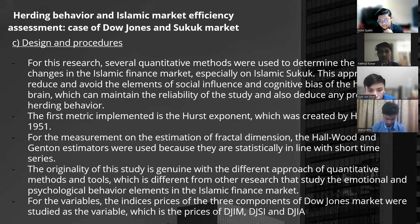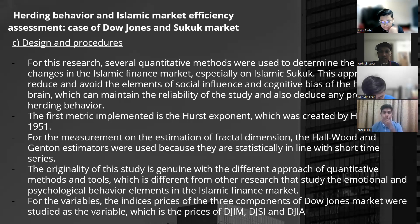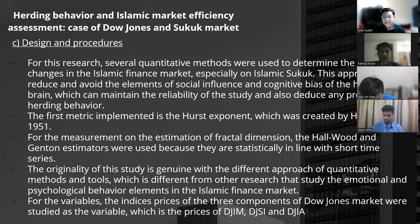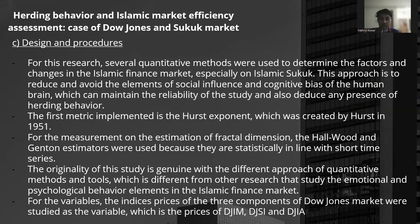Data from the Islamic sukuk market will be processed using the Hurst component. The result from the efficiency variable of the Islamic sukuk market is where the presence of herding will be identified and compared with the variable of the index price of the Dow Jones market. For sampling, the Dow Jones market data consists of index prices of its three components extracted from 1st January 2010 to 30 December 2016.